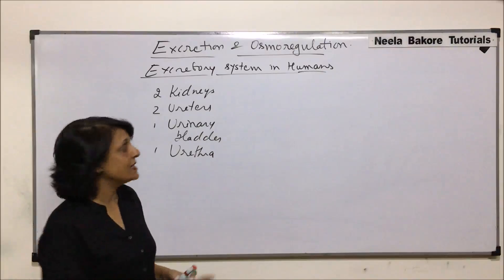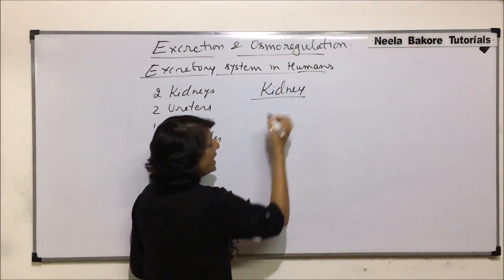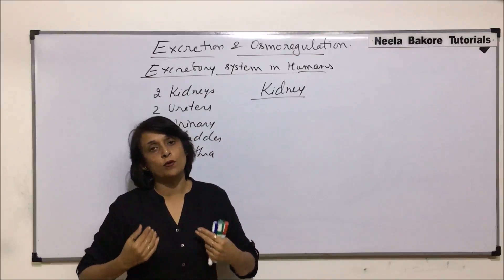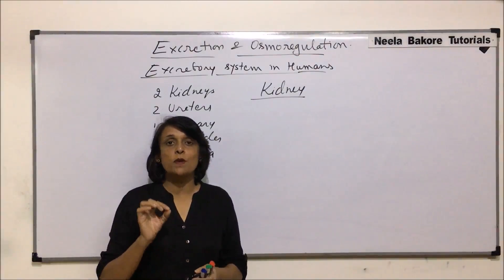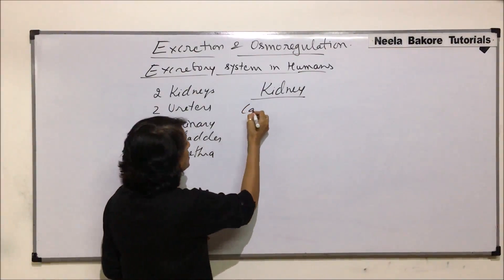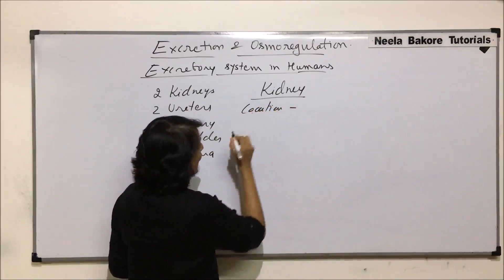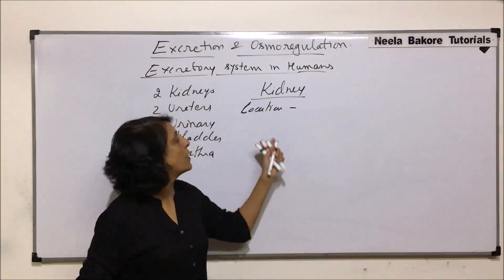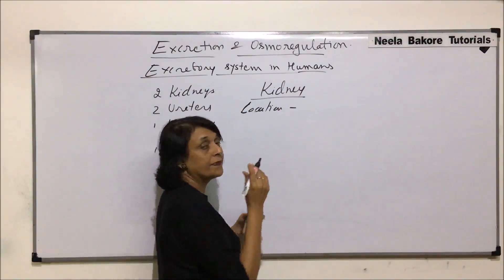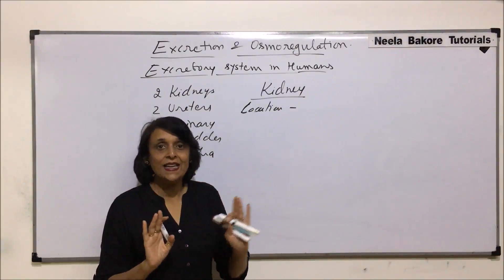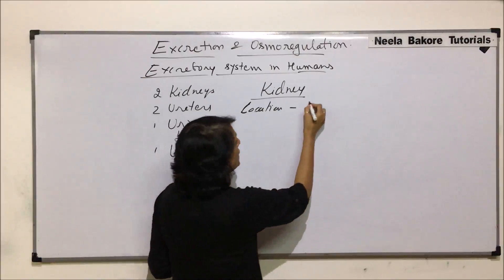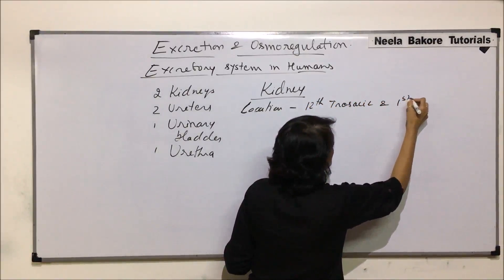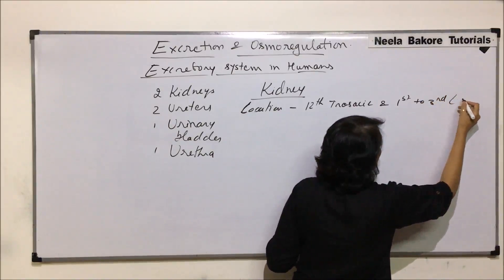When we talk of the kidneys, each kidney in case of humans is located in the lower abdominal region on the posterior side. If we want to be very specific about the location, the kidneys are located on both sides of the spine, in front of the twelfth thoracic vertebra and the first to third lumbar vertebrae.